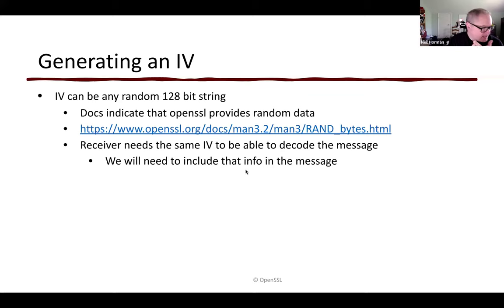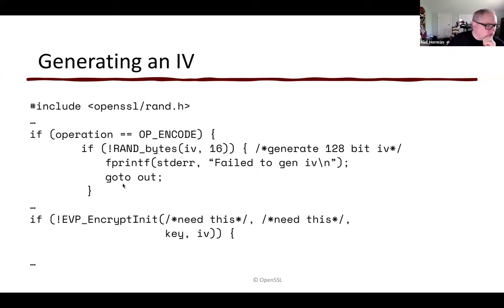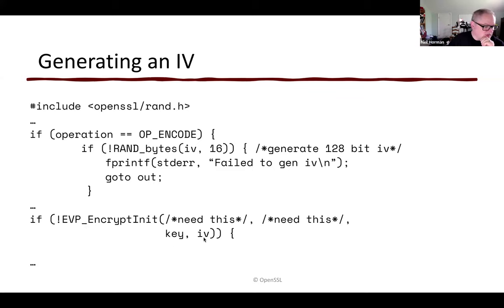Generating an IV: AES requires a minimum 128-bit initial vector. Searching the OpenSSL website for 'rand' gives us RAND_bytes — OpenSSL provides random data generation functions. When we're doing an encode, we call RAND_bytes with a predefined 16-byte initial vector array and tell it to fill 16 bytes. On output, the IV will be filled with a random initial vector. We can then update our EVP_EncryptInit call with the key and IV. We still need a context and a cipher, so let's handle those next.